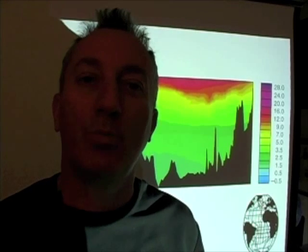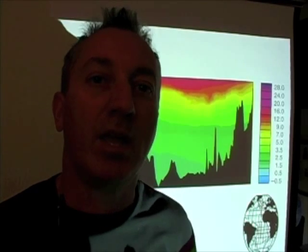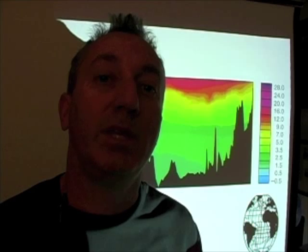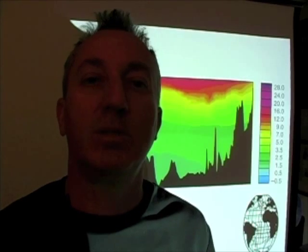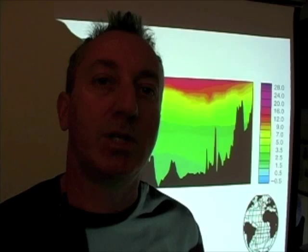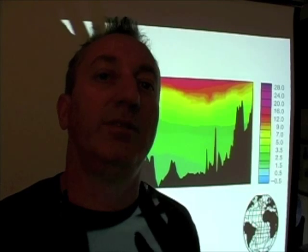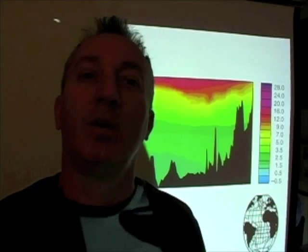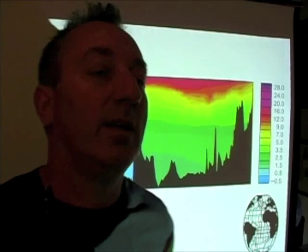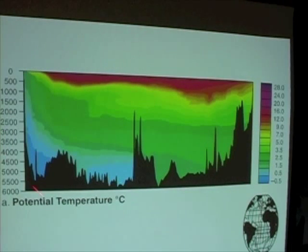And I really want to impress upon you how much work went into this single image. It really represents a 10-year effort in an experiment called the World Ocean Circulation Experiment, or WOCE, a major oceanographic project. It represents thousands, if not hundreds of thousands of man-hours, thousands of ship stations, probably millions of data points that went into creating just this one vertical slice of the North Atlantic Ocean.